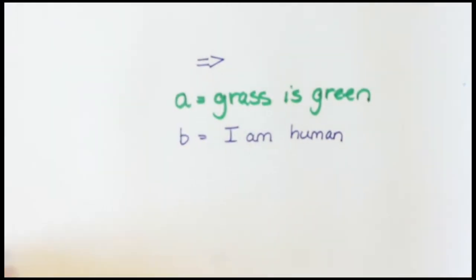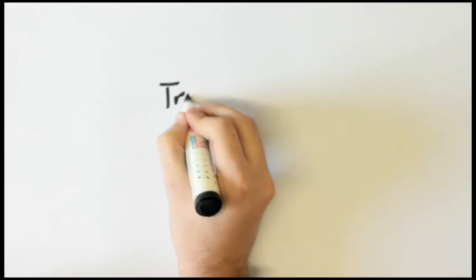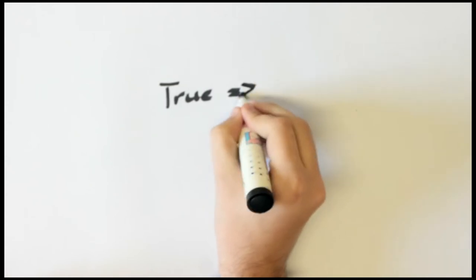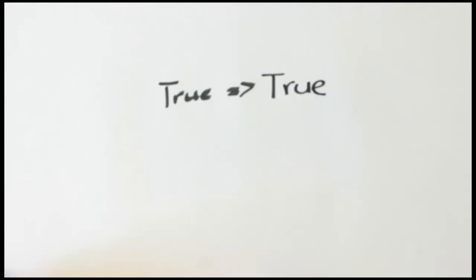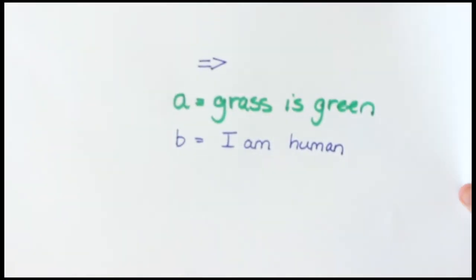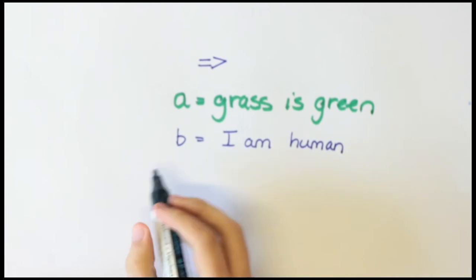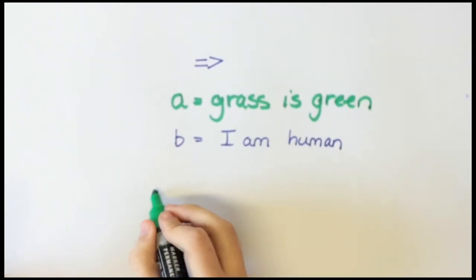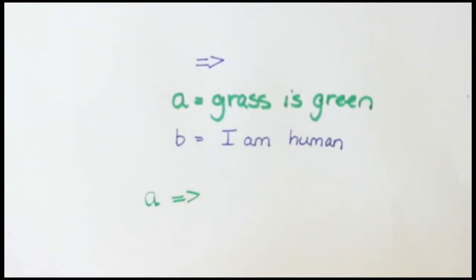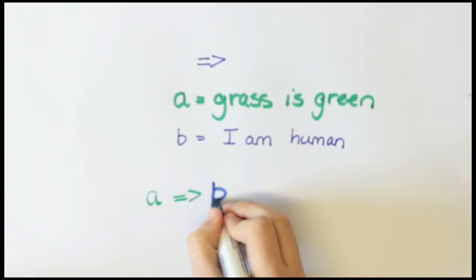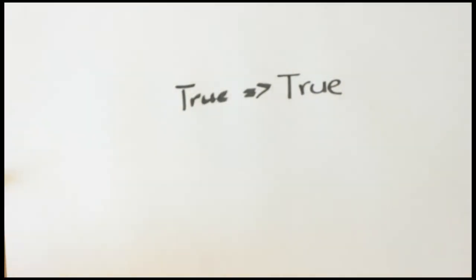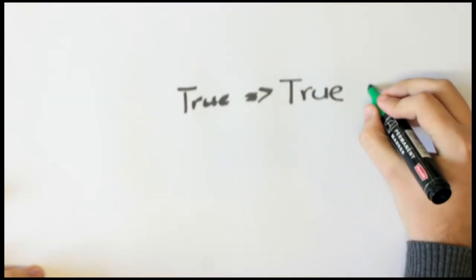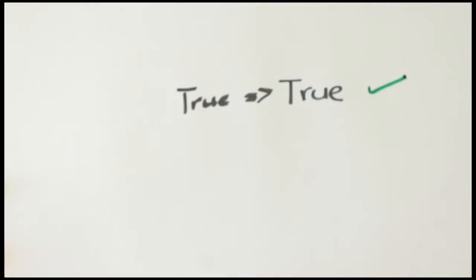Let's start drawing a truth table. Consider true implies true. Does one true thing imply another true thing? If you're arguing that the grass is green, you may in your next step of your argument say that you are human. A does not cause B, but it still follows because B is true.